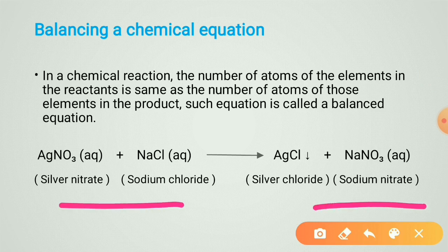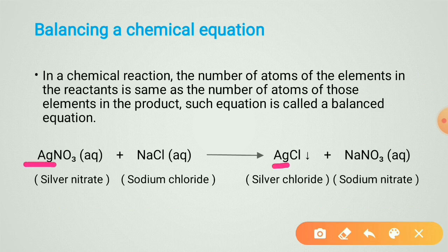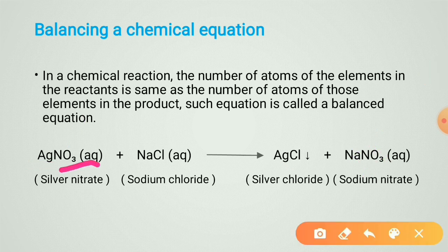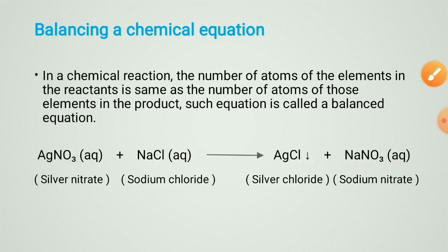Consider the atoms on both sides. Silver in the reactant is one; in the product also one. Nitrogen in the reactant is one; product also one. Oxygen in the reactant is three; product also three. Sodium in the reactant is one; product also one. Chlorine in the reactant is one; product also one. So this reaction is balanced.